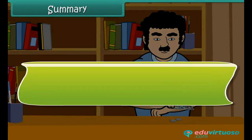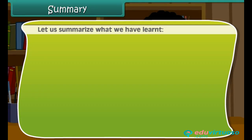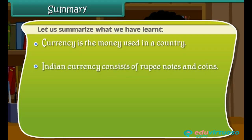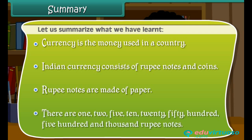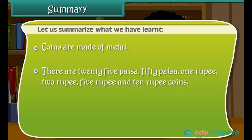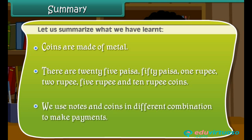Let us summarize what we have learned. Currency is the money used in a country. Indian currency consists of rupee notes and coins. Rupee notes are made of paper — there are 1, 2, 5, 10, 20, 50, 100, 500, and 1000 rupee notes. Coins are made of metal — there are 25 paisa, 50 paisa, 1 rupee, 2 rupee, 5 rupee, and 10 rupee coins. We use notes and coins in different combinations to make payments.